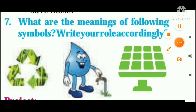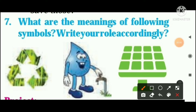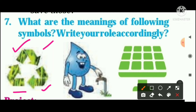What are the meanings of symbols related to environment conservation? There are some symbols and we can write down the meaning of each symbol. The first symbol is a symbol for recycling. Recycling has three mantras: recycle, reuse, and reduce. So the first symbol shows about recycling.